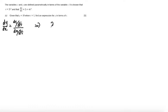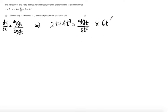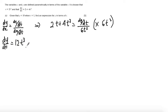We know dy/dx is 2t plus 4t cubed, and this equals dy/dt divided by dx/dt which is 6t squared. Multiplying both sides by 6t squared, dy/dt equals 2t times 6t squared plus 4t cubed times 6t squared, giving dy/dt equals 12t cubed plus 24t to the power of 5.